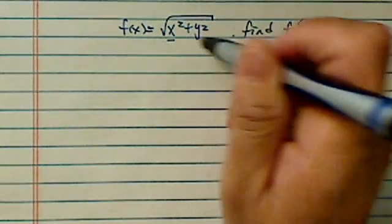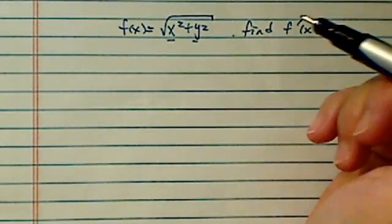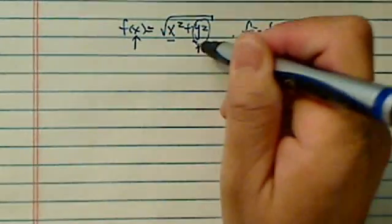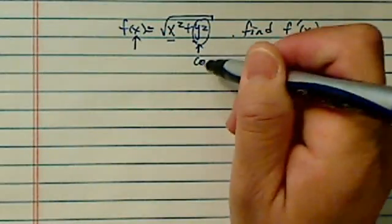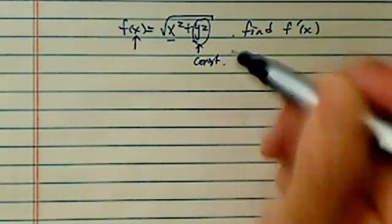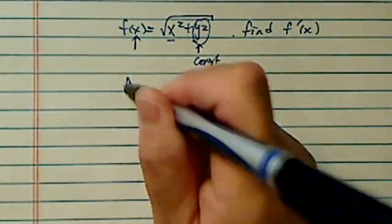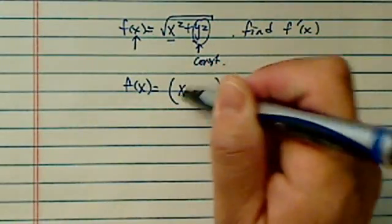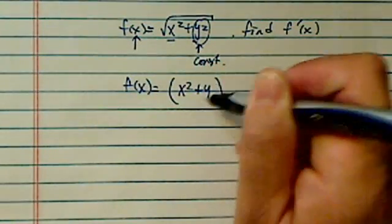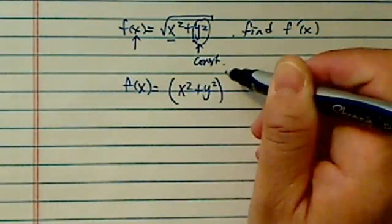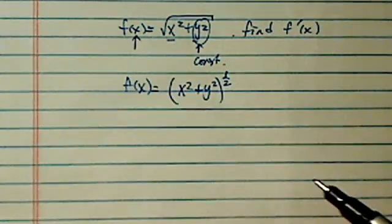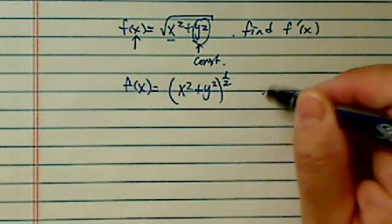There are two variables here, but since it's given as a function of x, we're going to pretend that the other one is a constant. The first thing we're going to do is rewrite it into exponential form, which makes it a little easier — so it's x to the half.